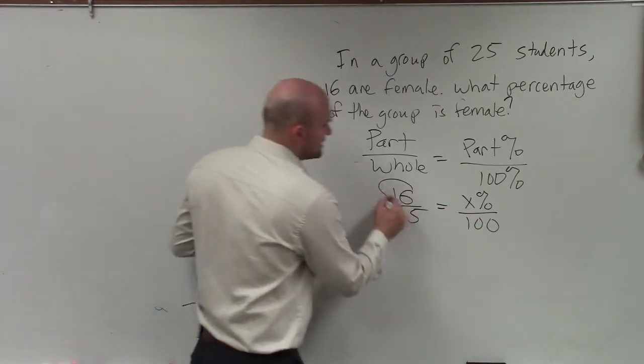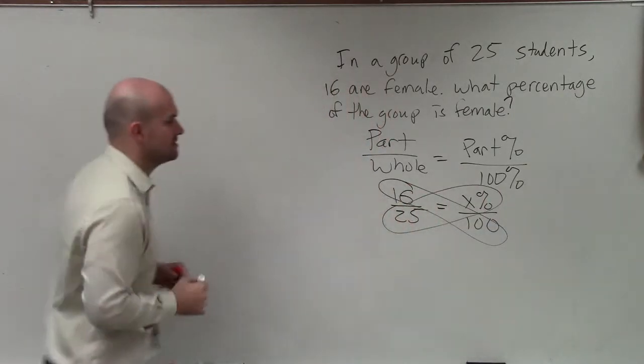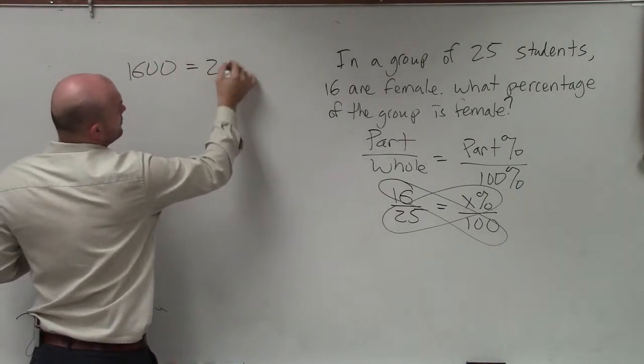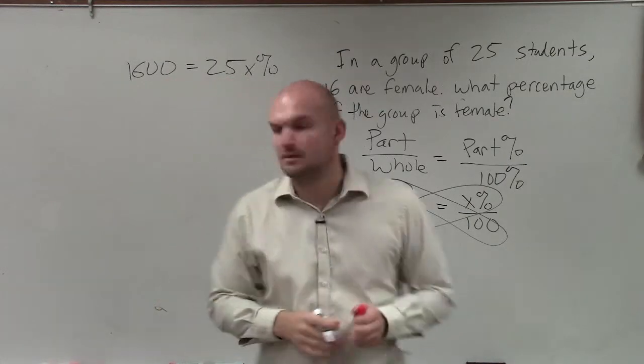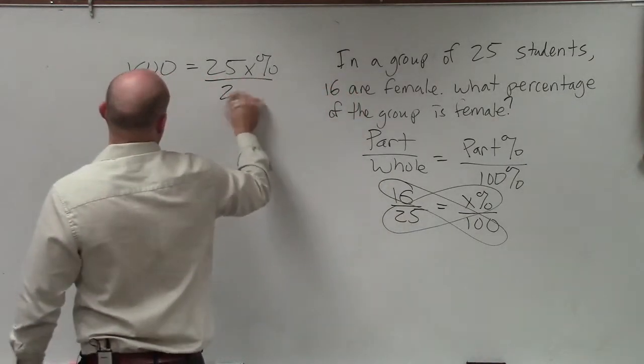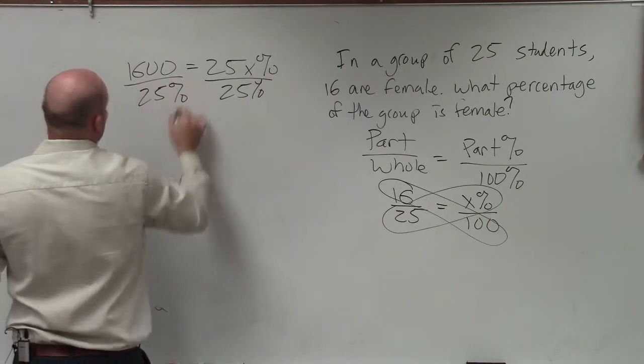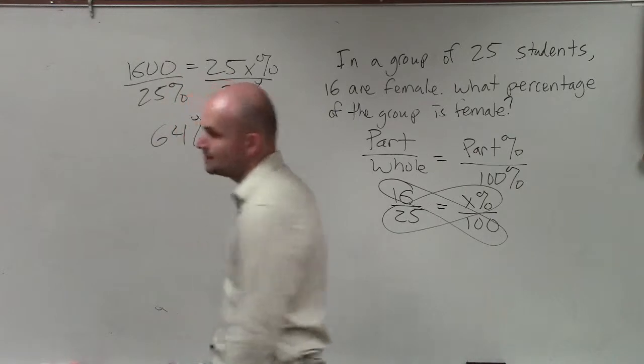The other way to do this is to apply the proportion, or the cross product. Therefore, I have 1,600 equals 25x. Then I divide by 25, and I get 64% equals x.